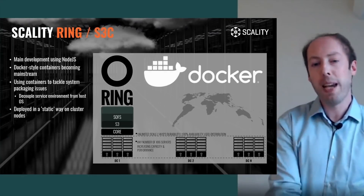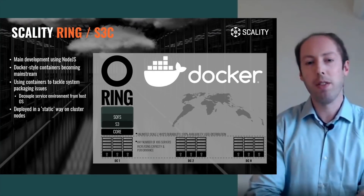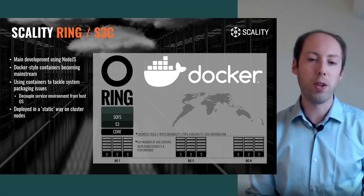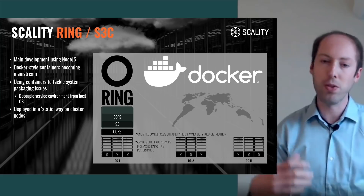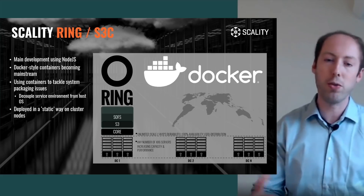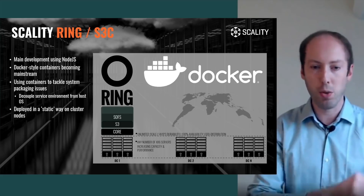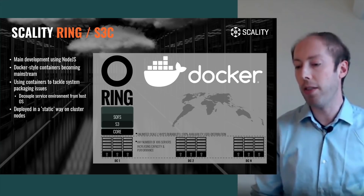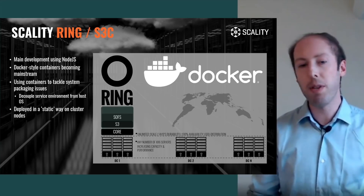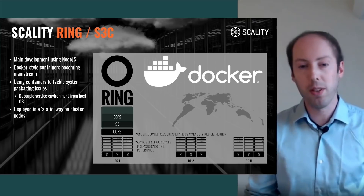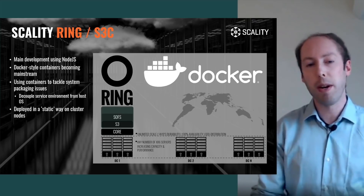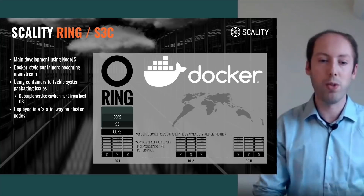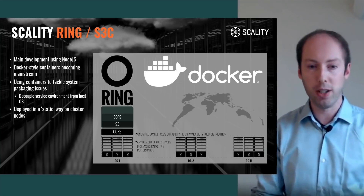Back in 2015, we extended Ring — the Ring product — with a new S3 compatible object storage interface. It was not our first S3 compatible storage interface; we had another one before, but it was much more extensive. It implements things like the IAM APIs, it's more efficient than the old one, and this was primarily developed using Node.js, running into modern environment packaging issues.